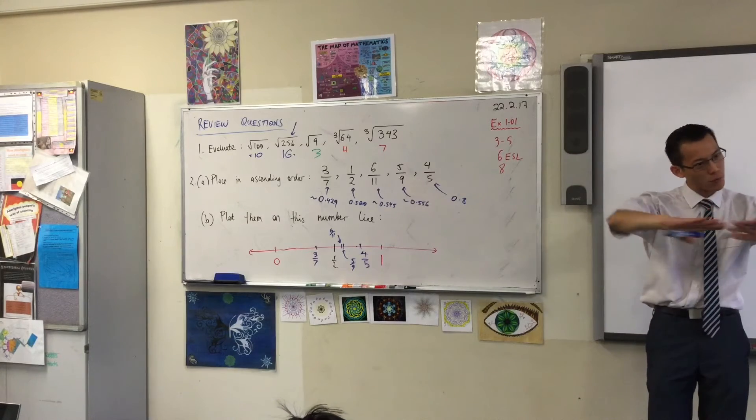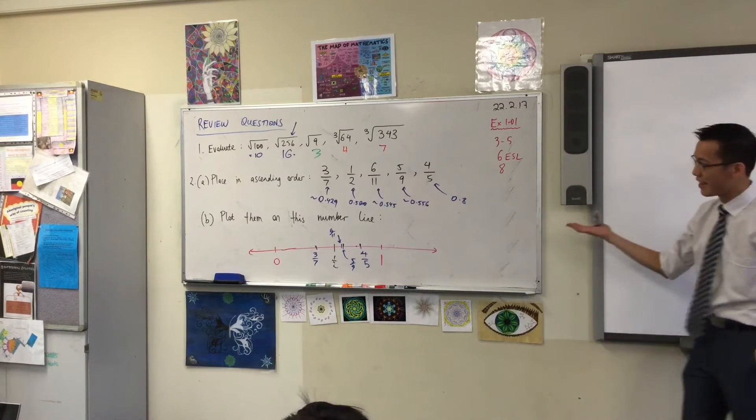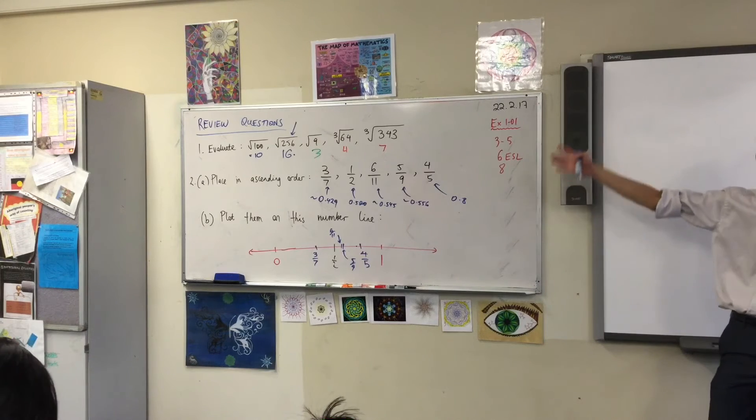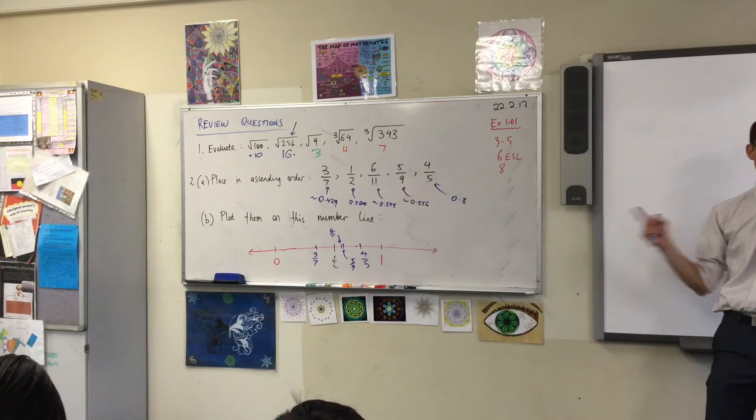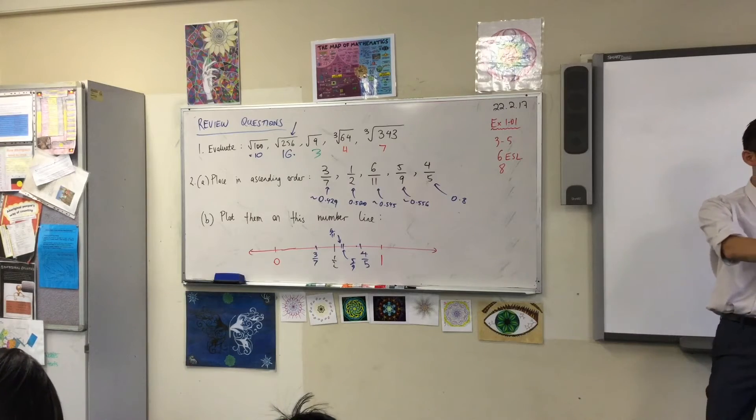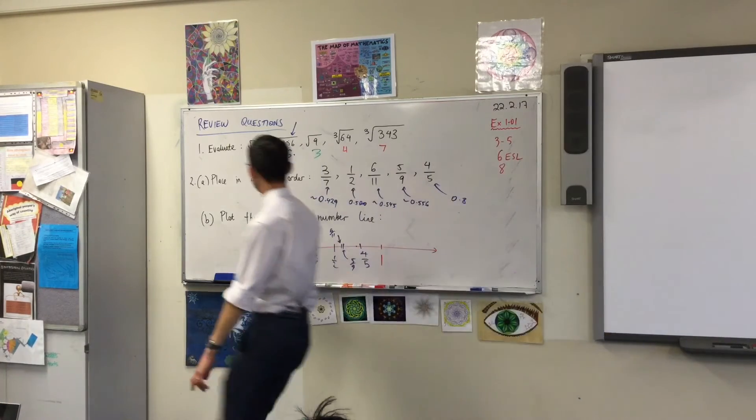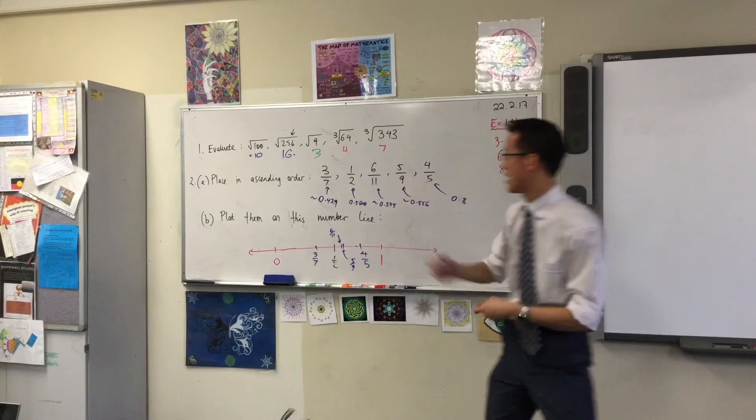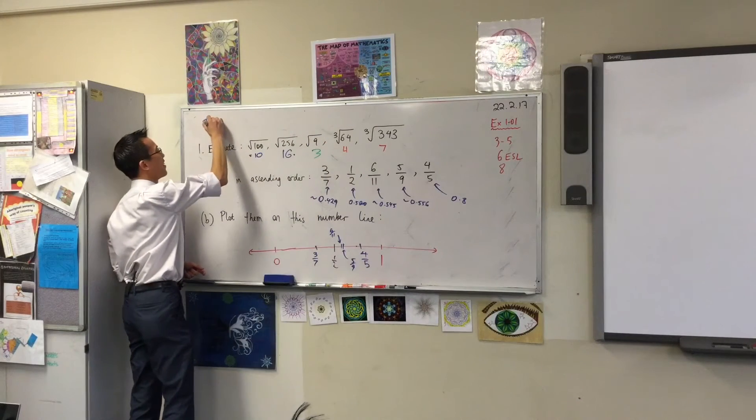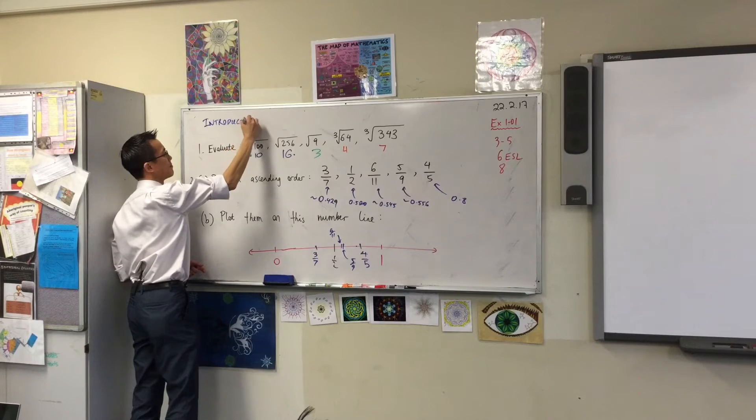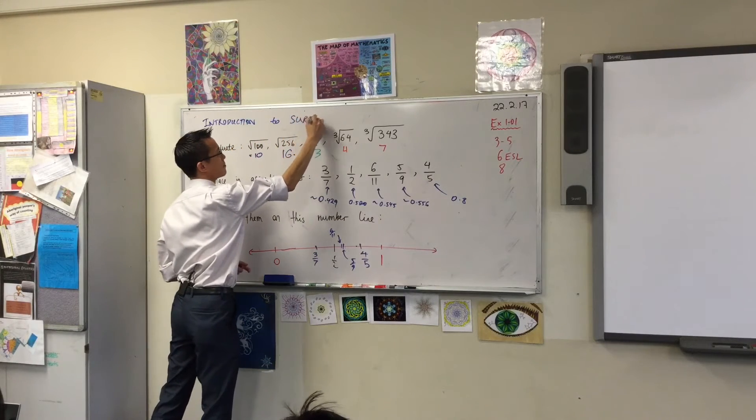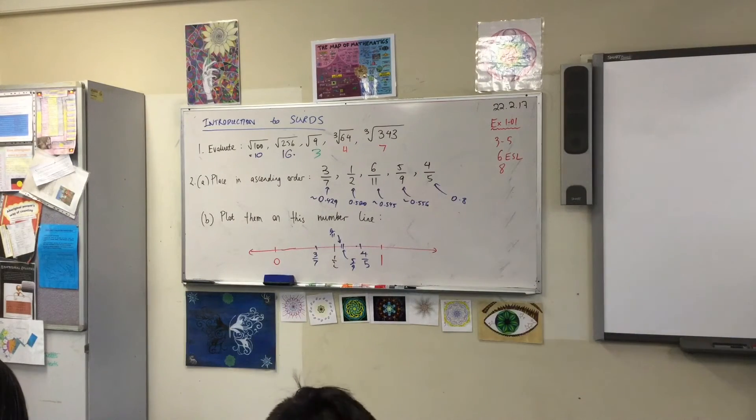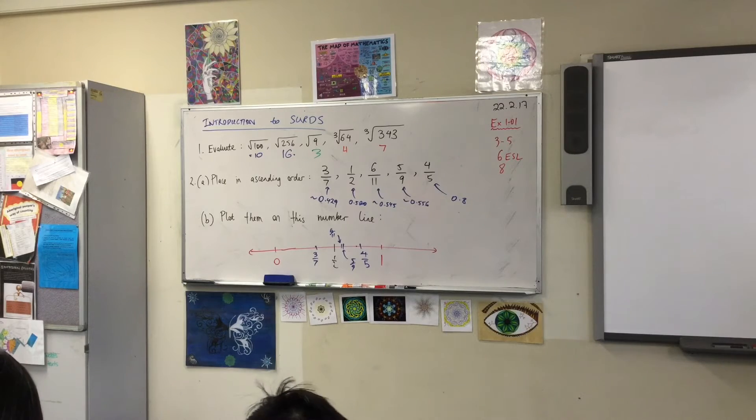Now I'd actually like you to rule that off because we're going to start a new topic today, hence the different kinds of review questions we've been doing. I want you to still have what we just did in front of you. So I'm going to change the heading, so let me make some new space. The heading you can make is introduction to SURDS, S-U-R-D-S. And keep your calculator there, it's going to be really handy.